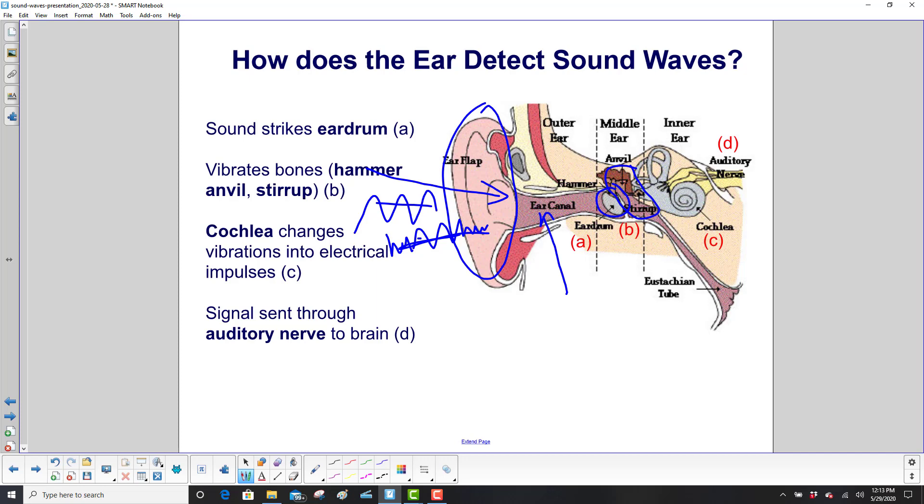The cochlea then changes those vibrations into electrical impulses. And now that you have electrical impulses, it goes from the auditory nerve into your brain where it figures out what you heard.